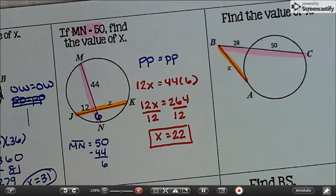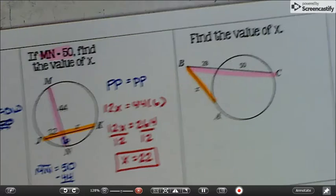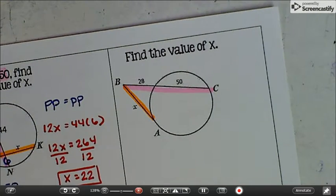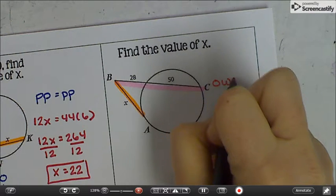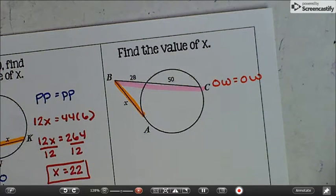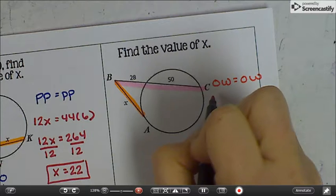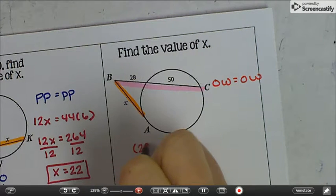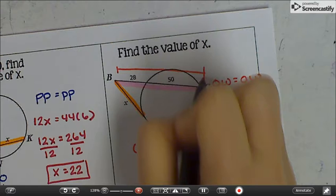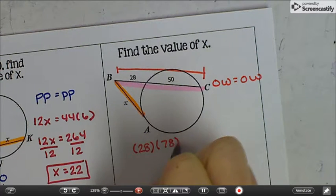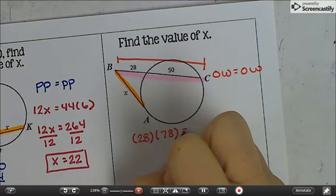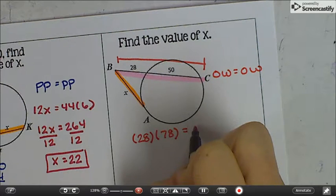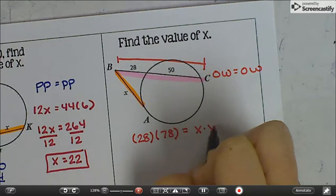Alright, so these are one step harder than what we've just done. Let's look at the next one. The next one is OW. So we're going to do OW equals OW. For the pink one we have the outside which is 28 times the whole thing, 78, add them together segment addition, equal to the outside times the whole thing.